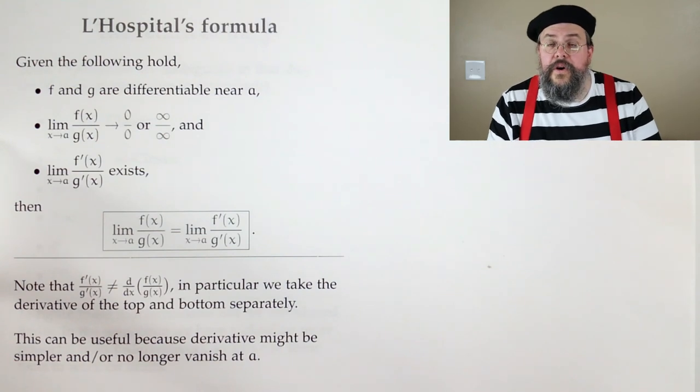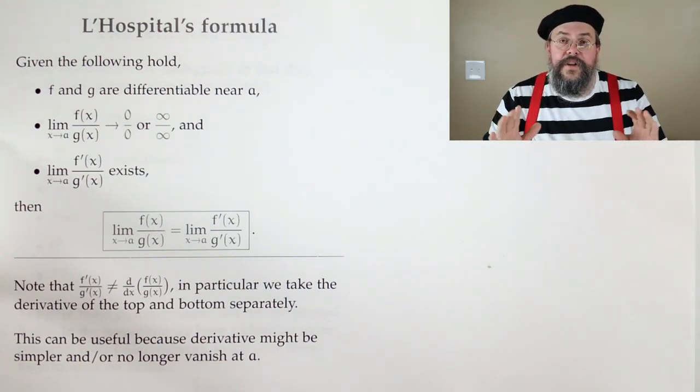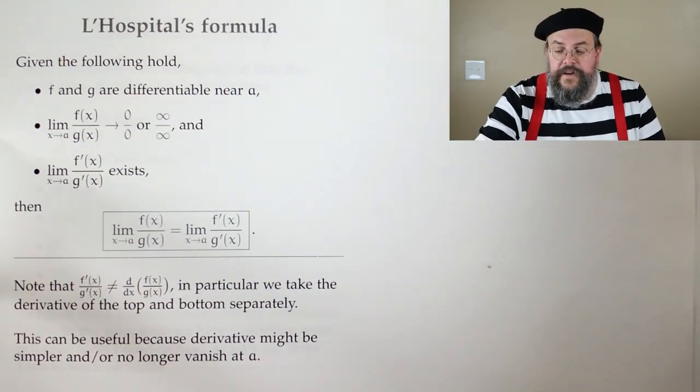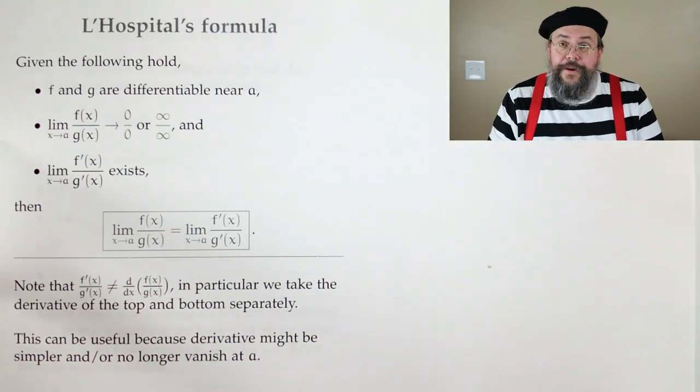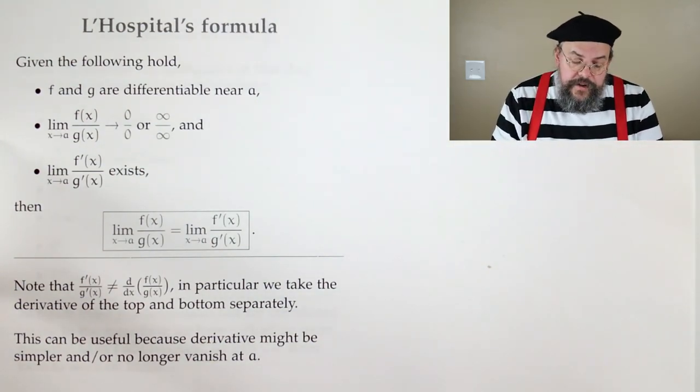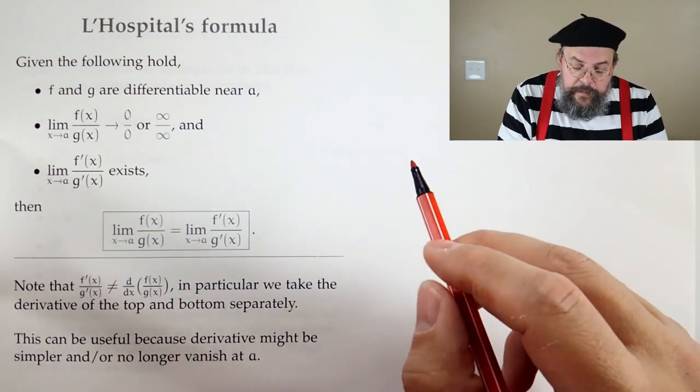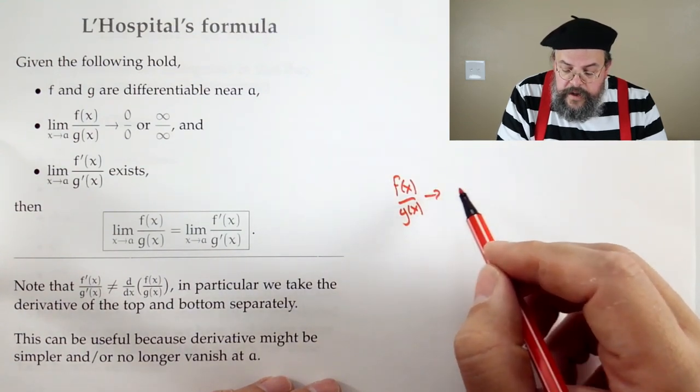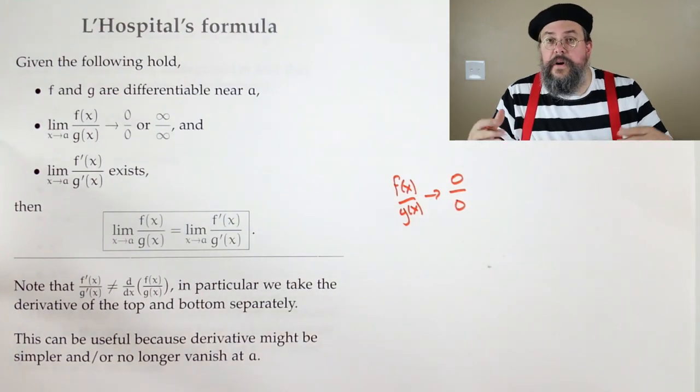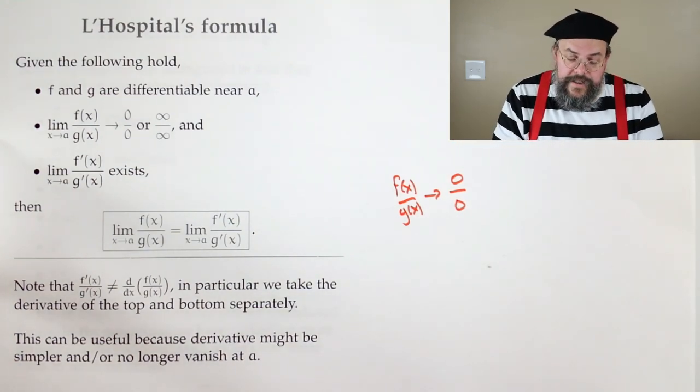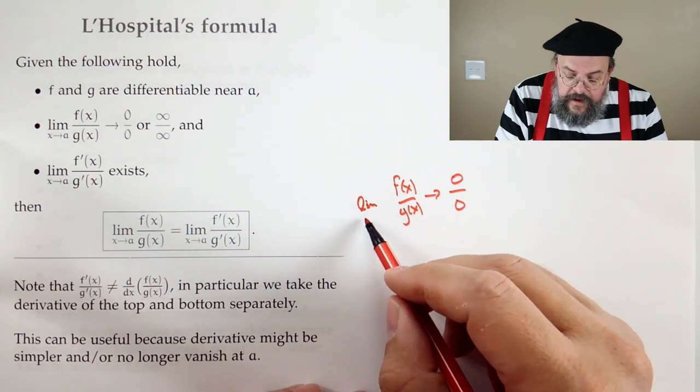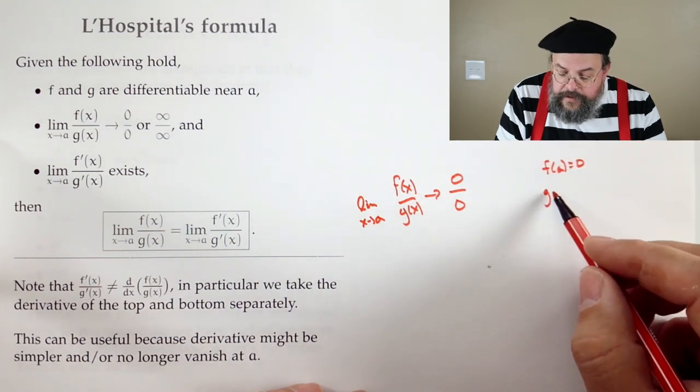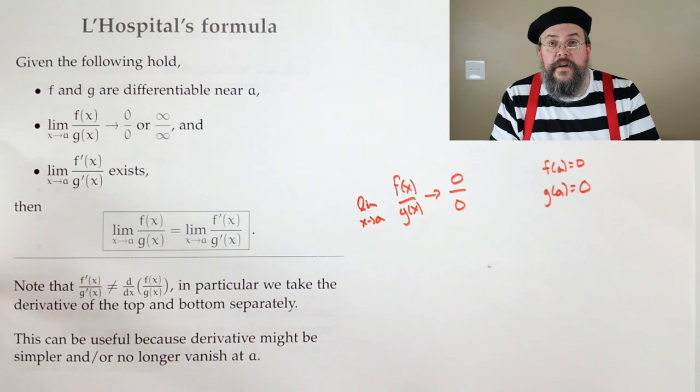Now, why is this true? Well, we're not going to give a complete explanation. We'll give a little bit of a hand-wavy explanation here as to why it might seem reasonable. And you can find there are lots of wonderful proofs out there. And so you can look them up on your own time. But here's sort of one way to think about it. Let's suppose that f over g is going to something like the form 0 over 0. And of course, our functions are nice. Now, what does that say?